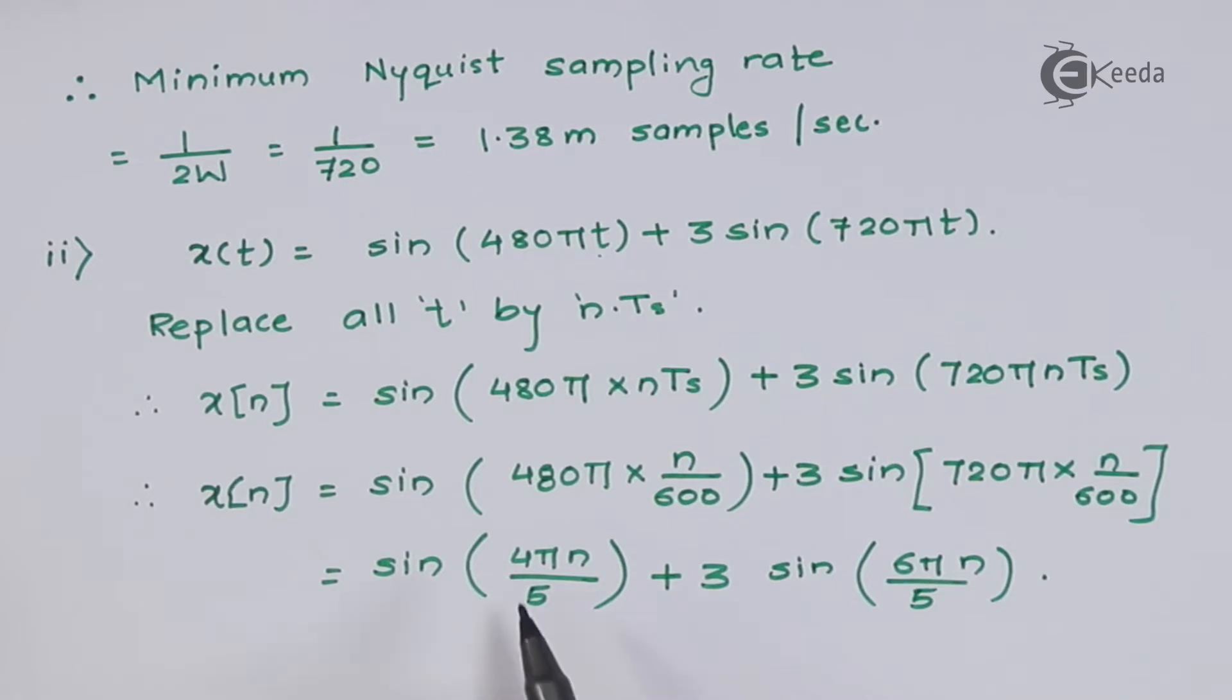What I will get is 4π/5·n and 3sin(6π/5·n). Now we can modify this sin(6π/5). After modification, you will get the same value as in the first part, 4πn/5. Which modification can we do?